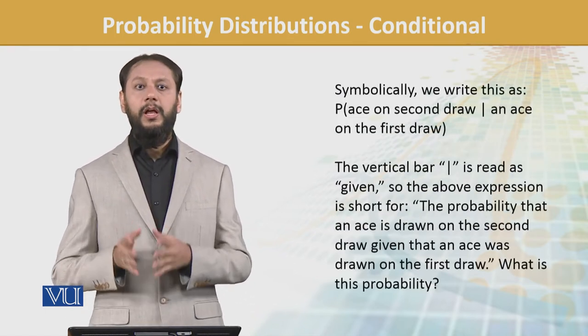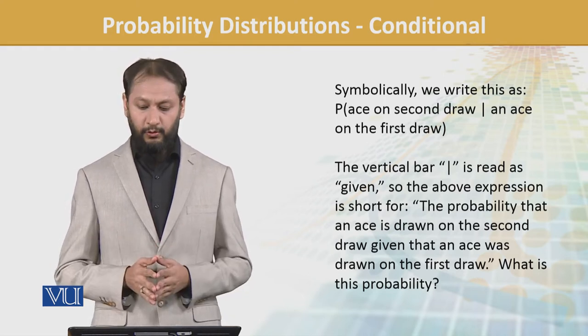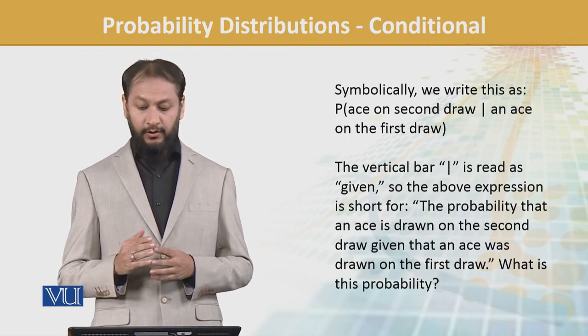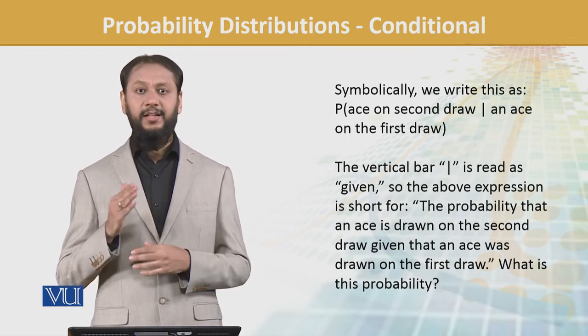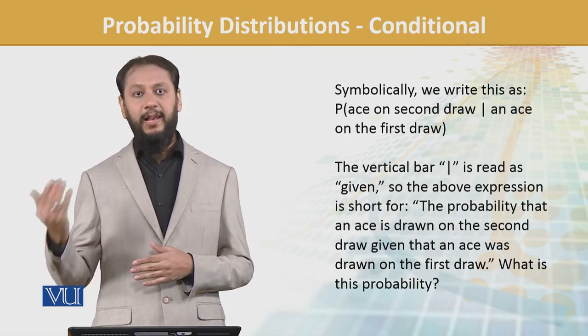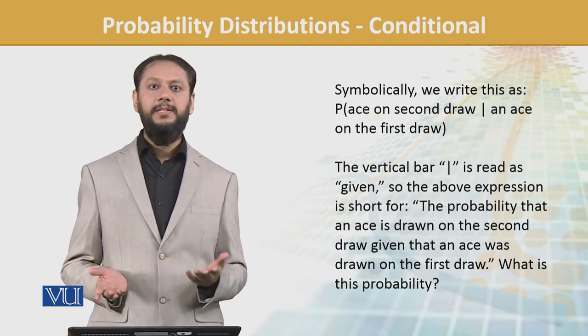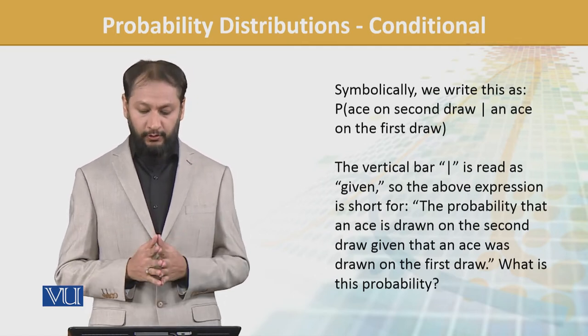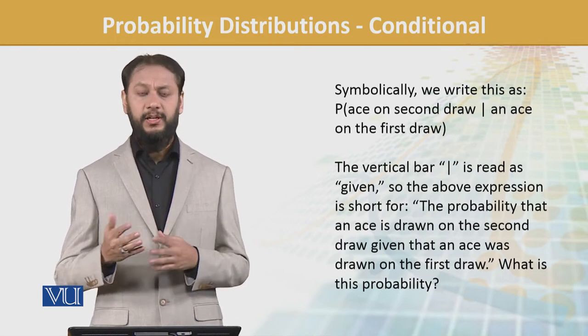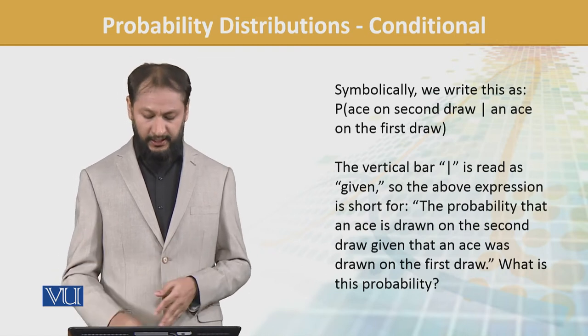If we write it in probability's specific syntax and format, it becomes: probability of ace in the second draw given ace in the first draw. This given word uses the bar notation. We are going to know this probability.